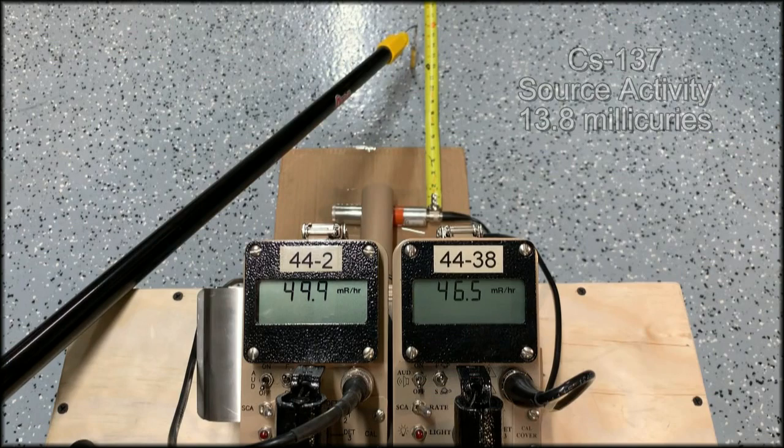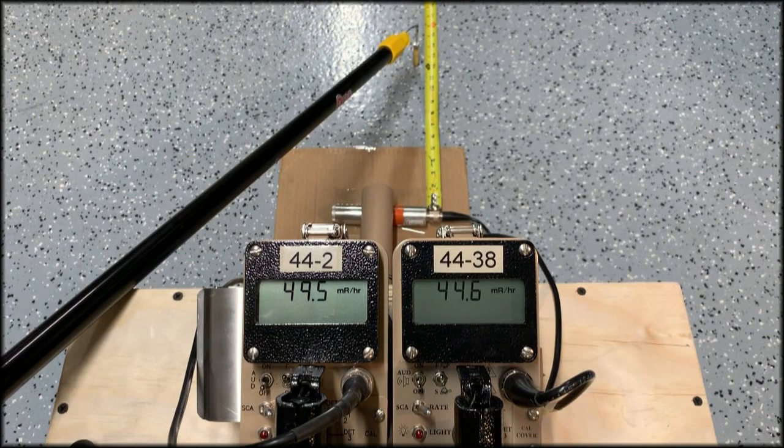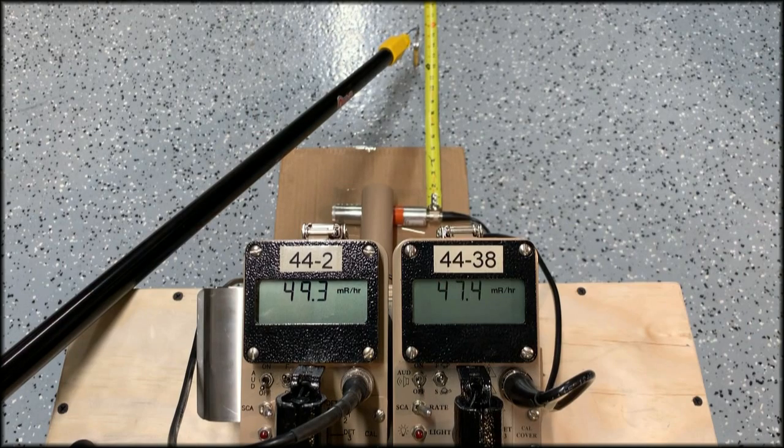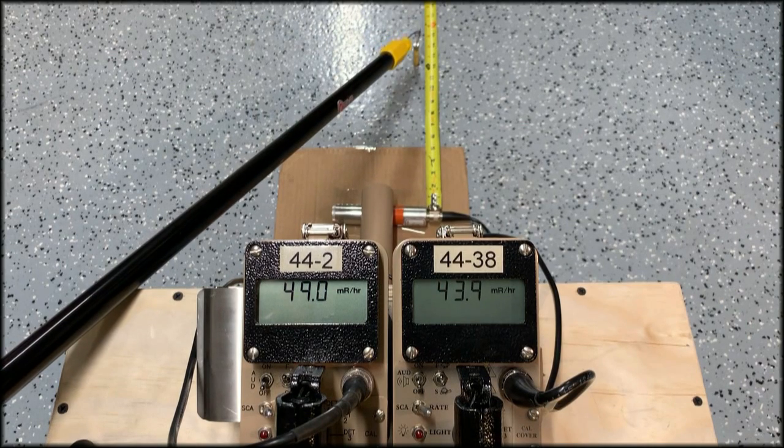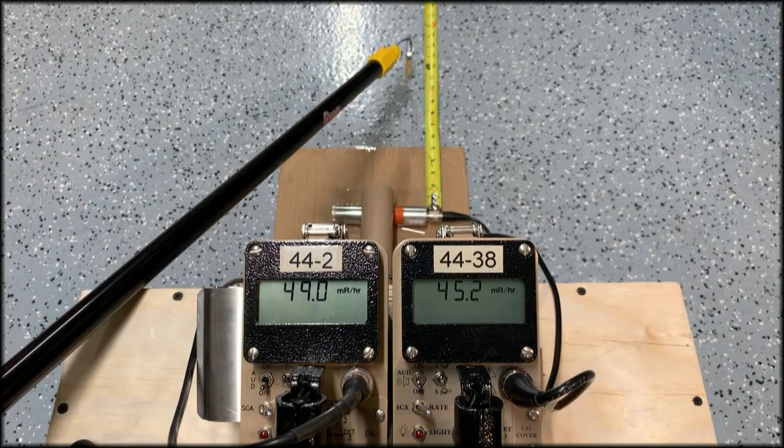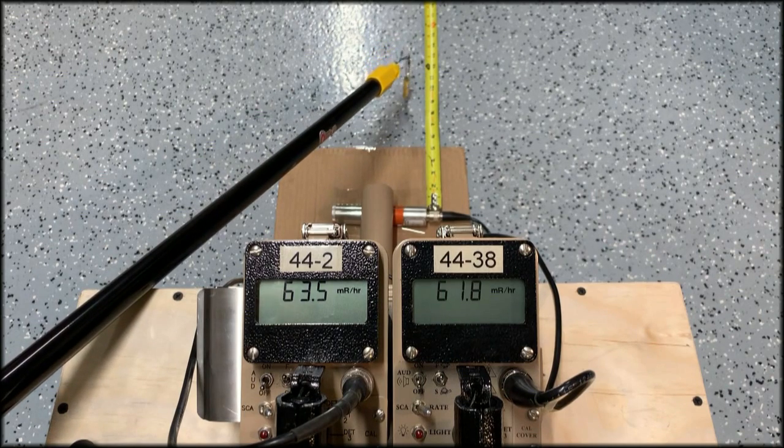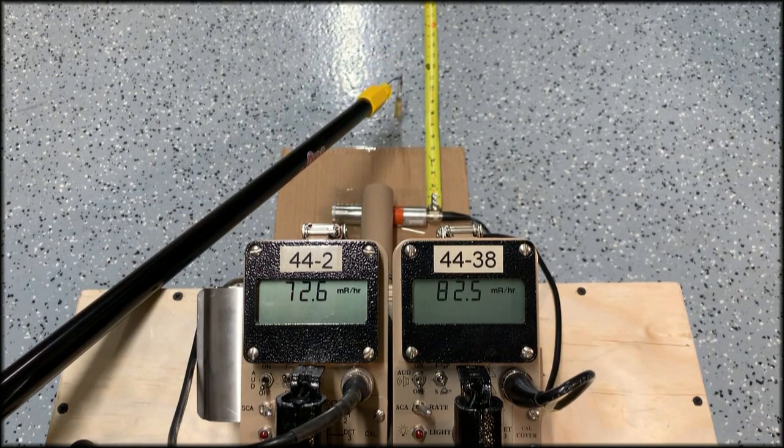And that's where we're going to get to about that 50 mR per hour point. And you'll see that both of these detectors, again, they're both calibrated to cesium. So they're going to read very similar. But as I move in from this point forward, this is where we should start to see the difference in the display of these two detectors.